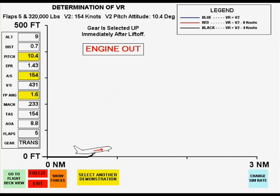This simulation shows an engine out climb for a wide body jet transport with a gross weight of 320,000 pounds. Flaps 5 is a normal takeoff flap setting and is a compromise between minimum ground run and maximum climb angle. The minimum possible value of V-2 is at least 18% above stalling speed and 10% above VMC.